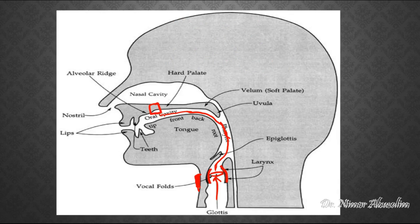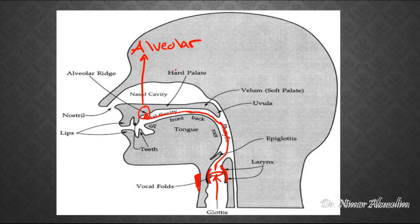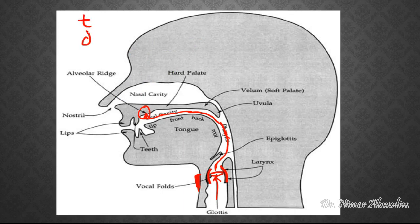As the air continues to move on, it can be modified exactly at the alveolar ridge — the area right behind your upper teeth. Sounds produced in this area are called alveolar sounds. The alveolar sounds in English include T, D, S, Z, N, L, and the rhoticized or retroflexed American R.